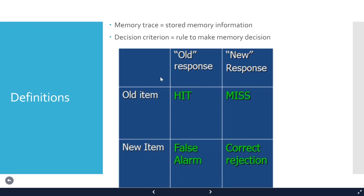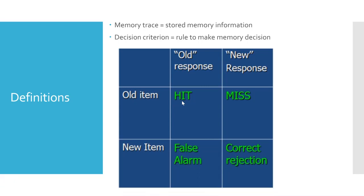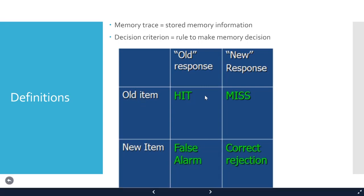In some cases this will be an accurate judgment. If you're presented an old item and you call it old, that's what we call a hit. The language is oriented toward identifying old items from new. If you're presented an old item but fail to identify it and call it new, that's a miss — you failed to detect that old item.